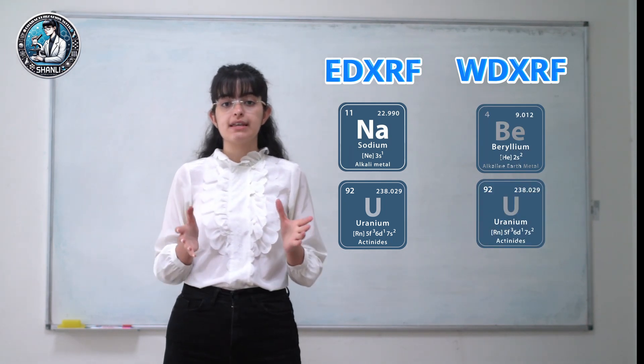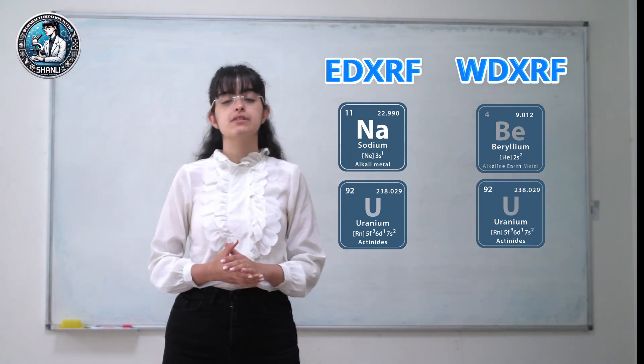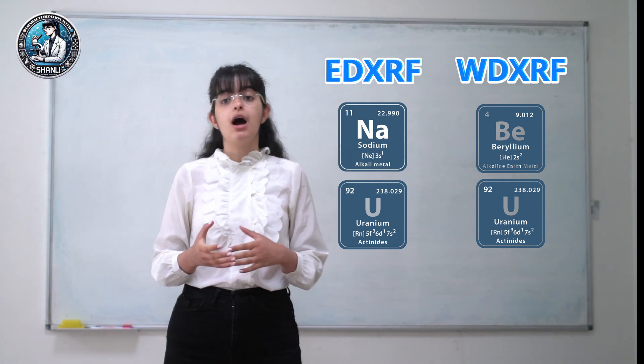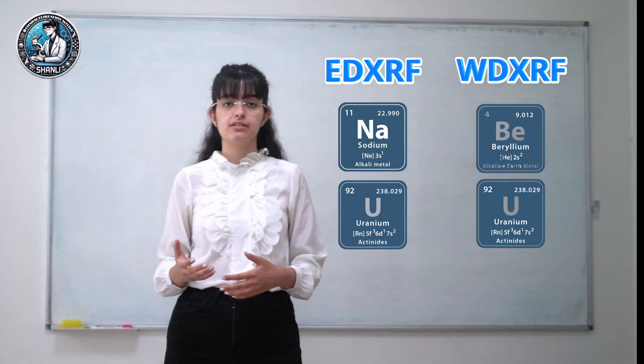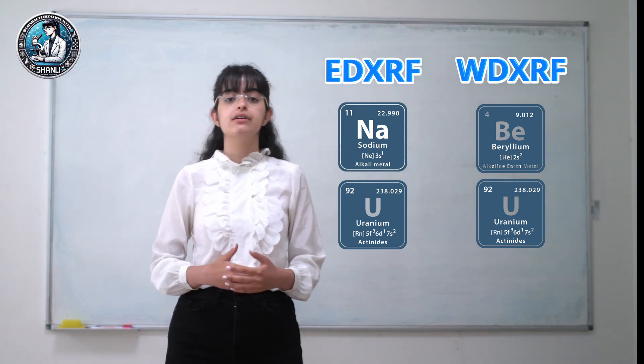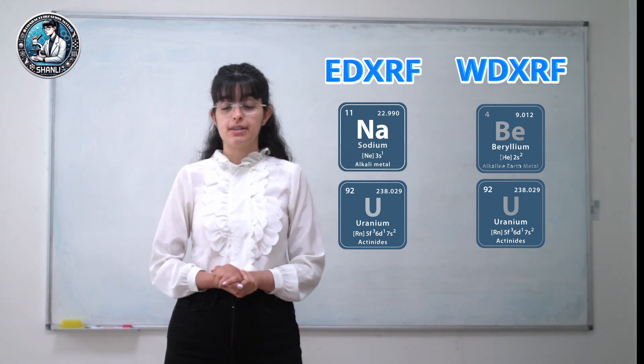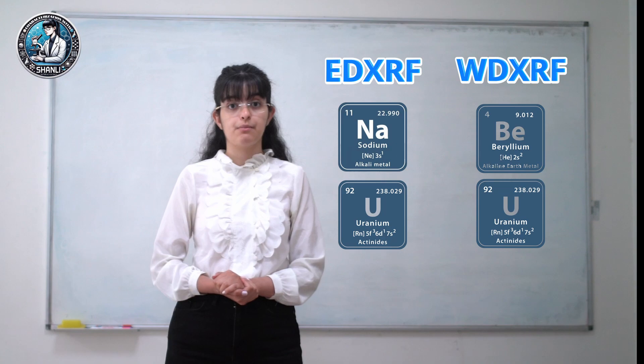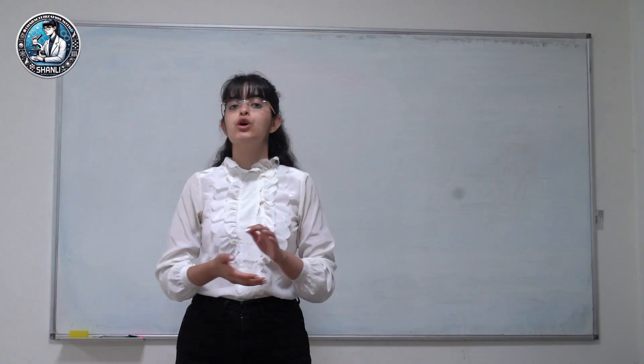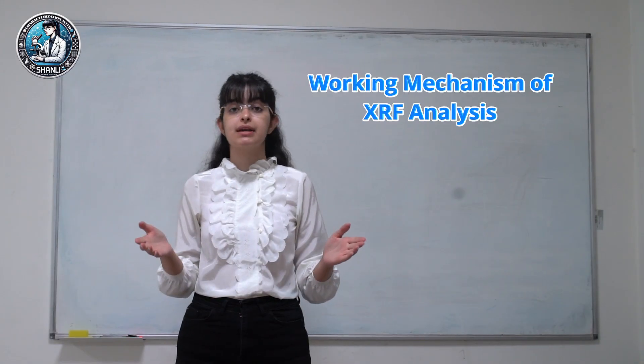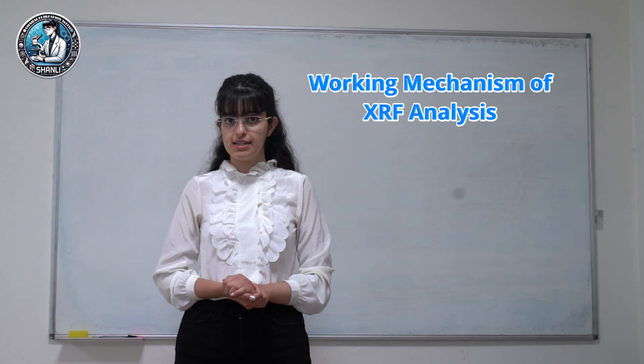But both of these methods can detect levels from sub-PPM up to 100%. Generally, elements with higher atomic numbers exhibit better detection limit compared to the light elements in our samples. Here, I want to continue with the working mechanism of XRF analysis.